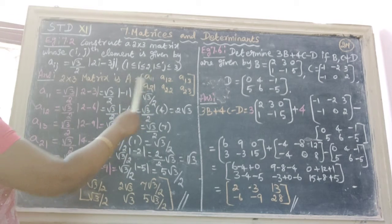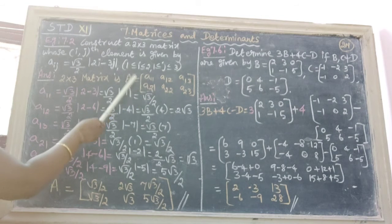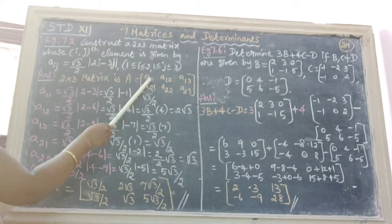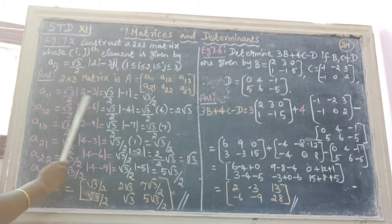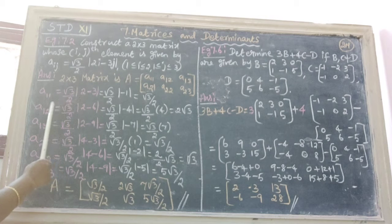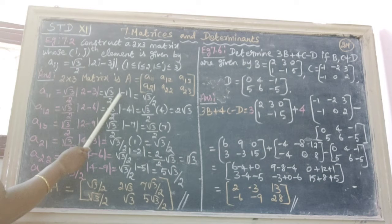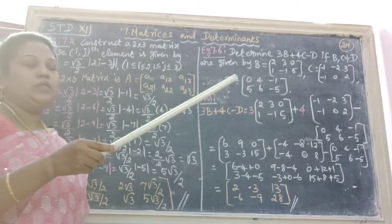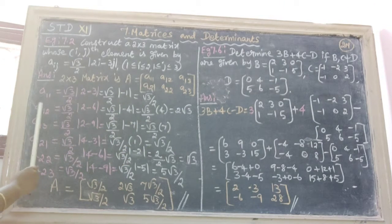i means row, j means columns. Then find out the values. A11 will be i equal to 1 and j equal to 1. We get root 3 by 2 modulus 2 minus 3 equal to root 3 by 2 modulus minus 1. Modulus minus 1 is equal to plus 1, therefore the answer is root 3 by 2.